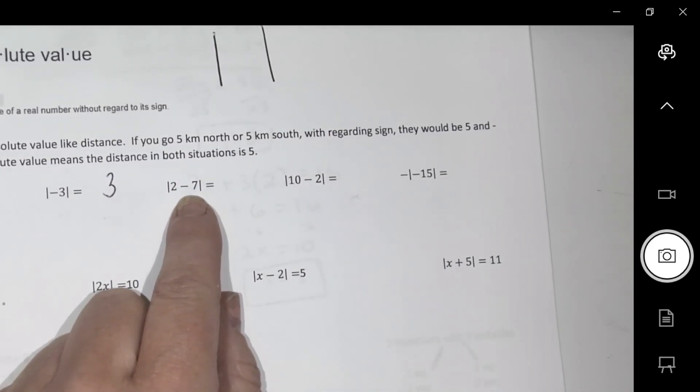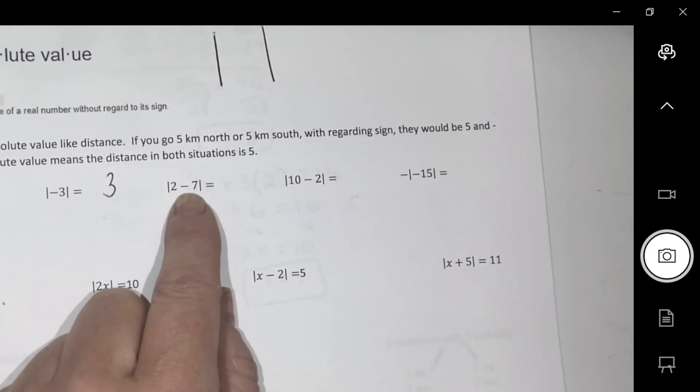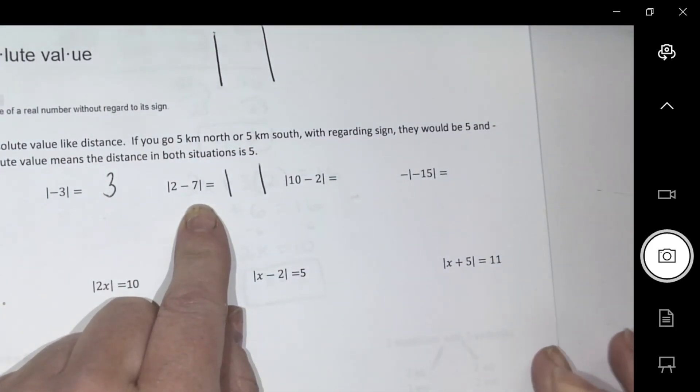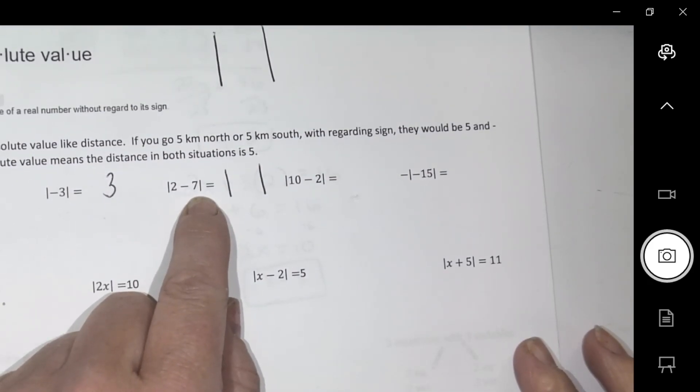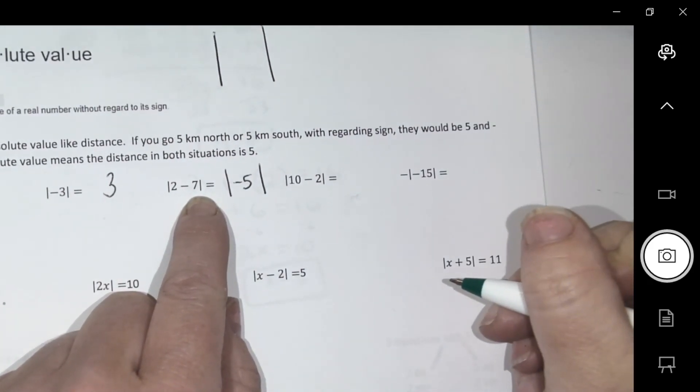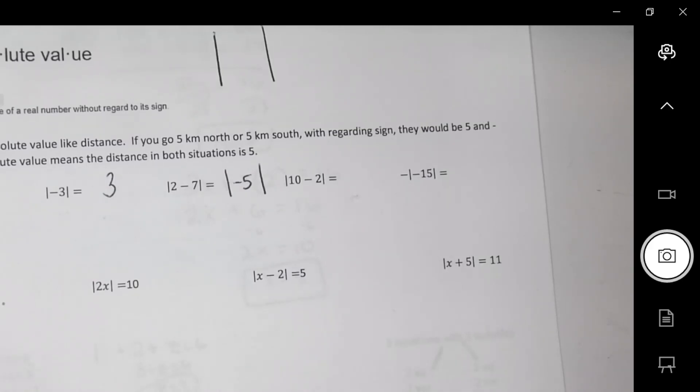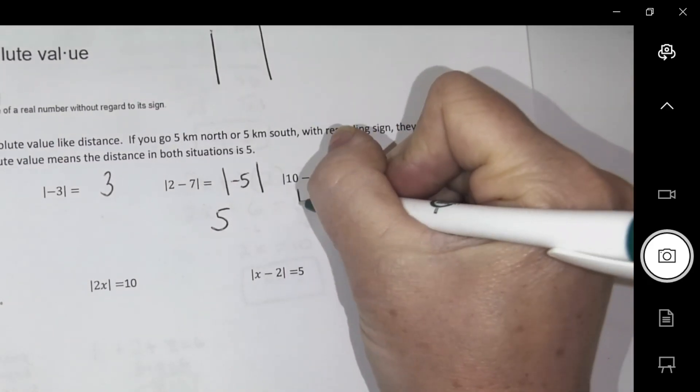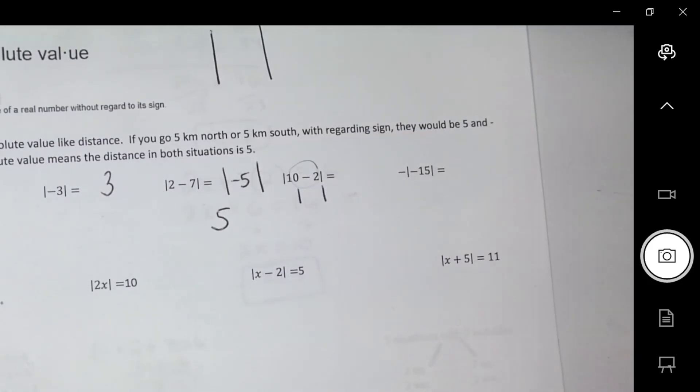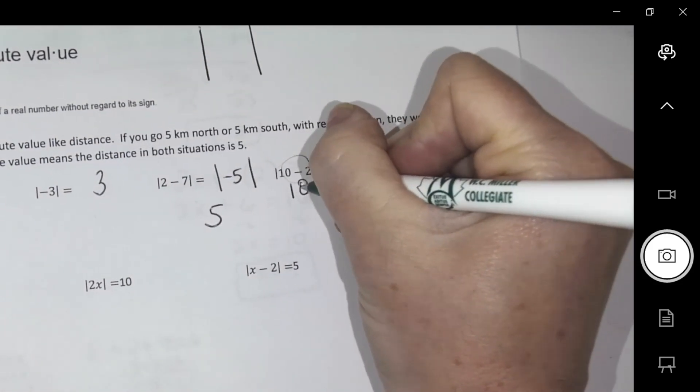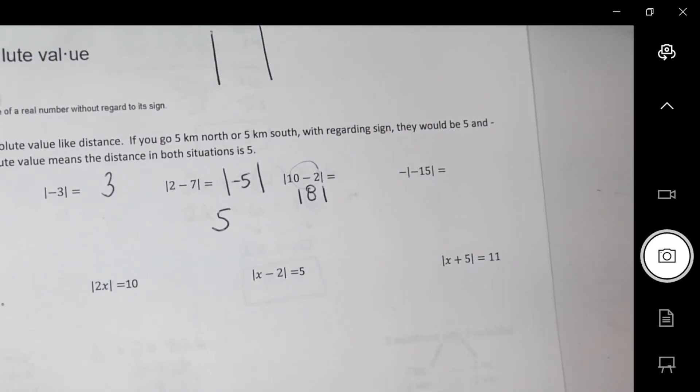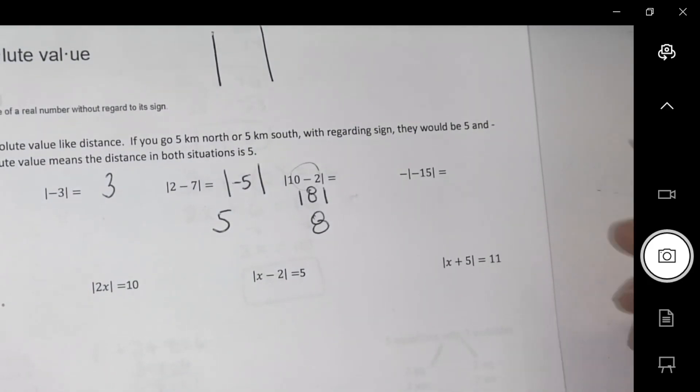Mathematically, we have to treat them like brackets. So I'm going to do inside the brackets first. What's 2 subtract 7? That's negative 5. So in the brackets is negative 5. Then what's the absolute value of negative 5? Five. In the brackets, 10 subtract 2 is 8. What's the absolute value of 8? Eight.